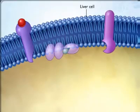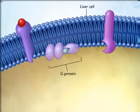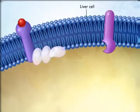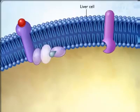When epinephrine binds to beta-adrenergic receptors on the liver cell, G proteins on the inner side of the cell membrane are activated. Each G protein is composed of three subunits.